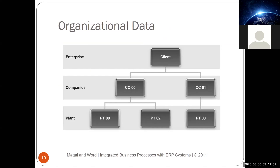As you can see, there are three layers in the hierarchy diagram. The first one is the enterprise — this is usually a multinational company or corporation. The next one is the companies. For example, they may have two branches: one in Germany and another in Vietnam. Those are what we call the company codes.